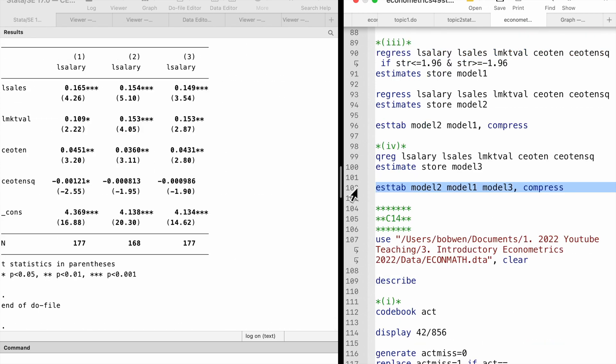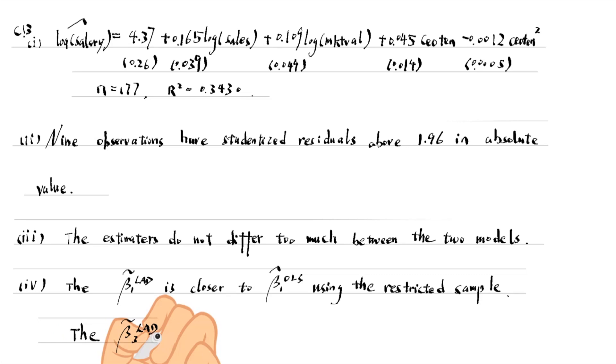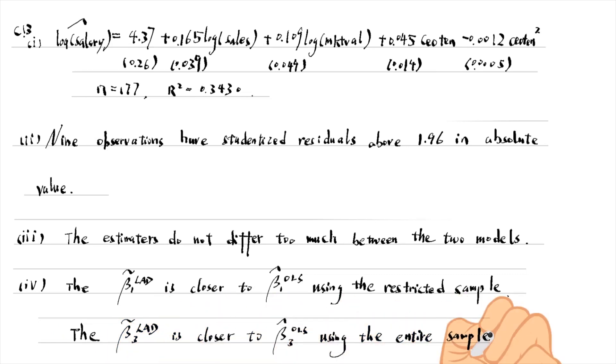The LAD estimates are listed with the OLS estimates in the table for part 4. The estimate of beta 1 is closer to the OLS estimate using the restricted sample, but the estimate of beta 3 is closer to the OLS estimate using the entire sample. Please check out my videos on reporting estimated coefficients from different models in a table using the estimates, store, and ESTAB commands in Stata.